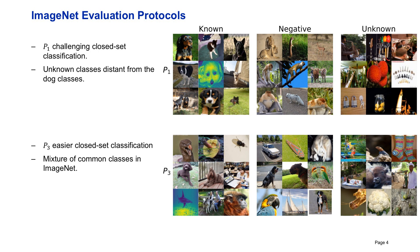On the other hand, in protocol three, the closed set task is easier since the known classes are different from each other. After all, it is easier to distinguish a dog from an insect than two similar types of dogs. Protocol three is closer to an open set scenario since it is composed of a mixture of common classes in ImageNet, including living beings and objects.